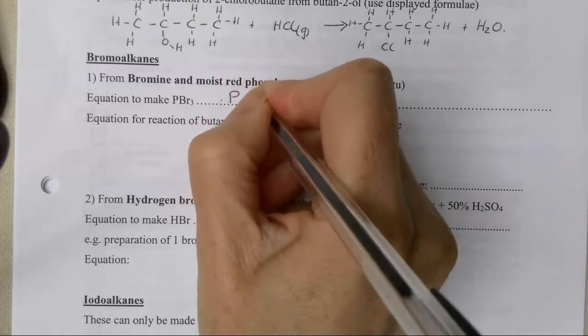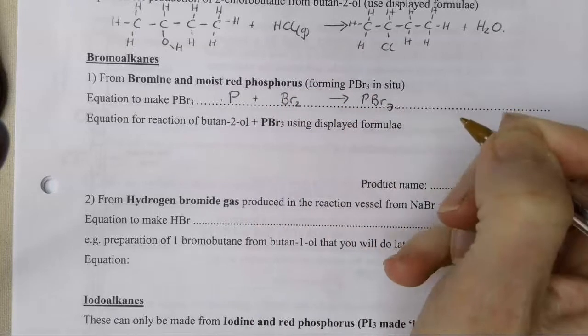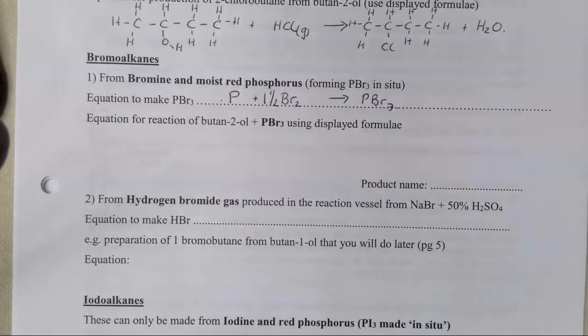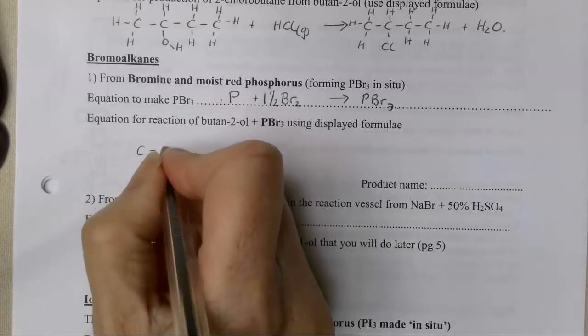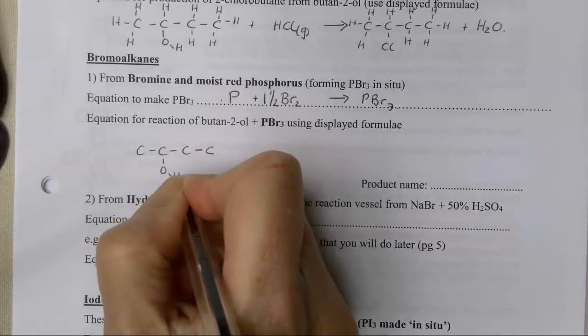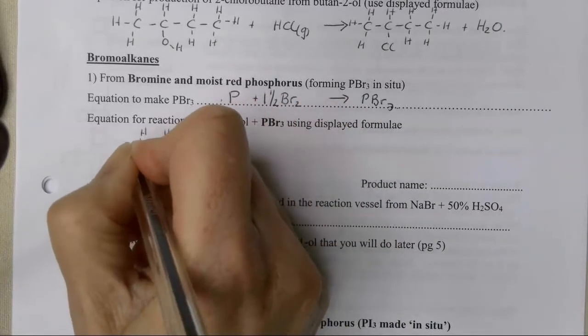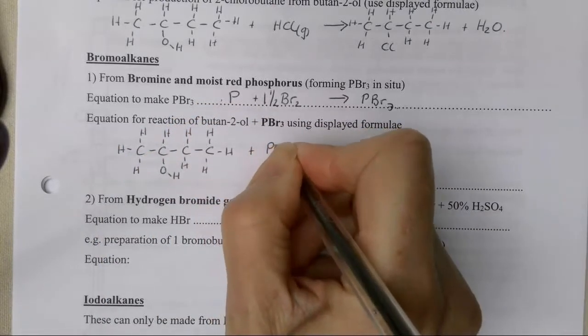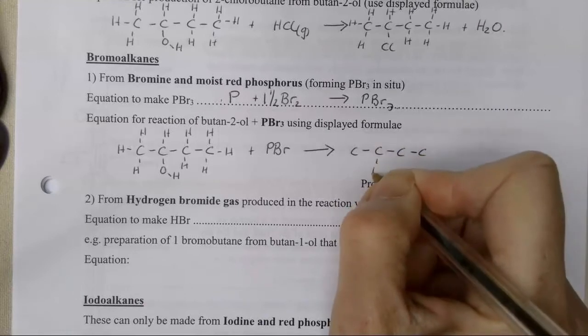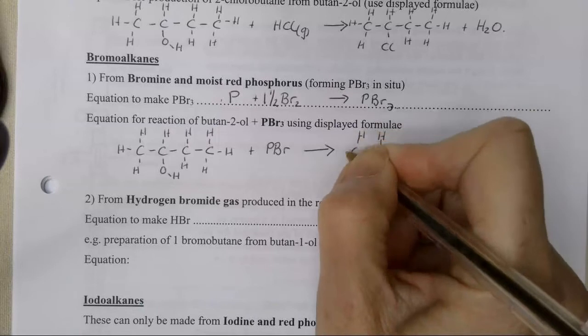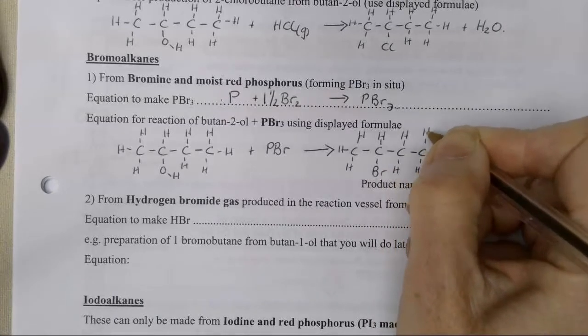If I then react butan-2-ol with my PBr3, it's a very similar reaction to the chloro reaction. I'm starting with the OH group on the second carbon because it's butan-2-ol. I add my PBr3. And this makes my product where my Br is now on the carbon where the OH group started.